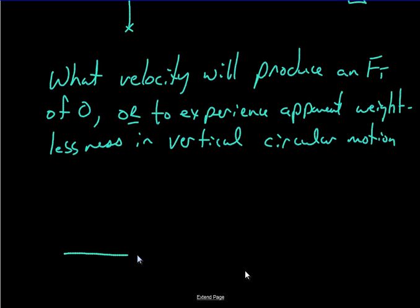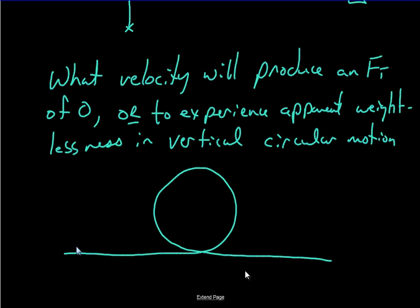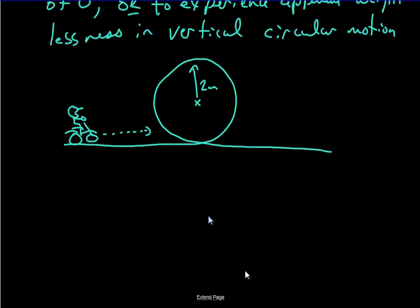So let's say we have this. And let's say we have a guy on a motorbike who wants to go through the loop of death here. And let's say that the radius of this is, I don't know, let's say it's two meters. What's the slowest he can be going to make it through this loop?